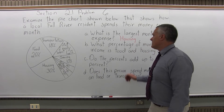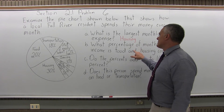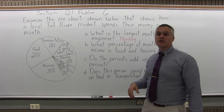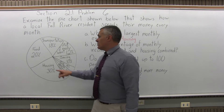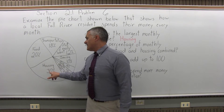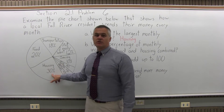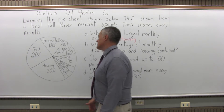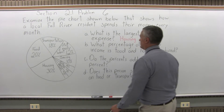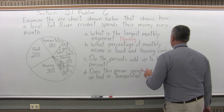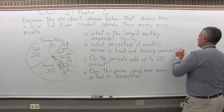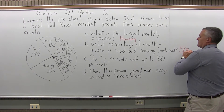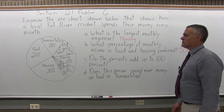Part B: what percentage of the monthly income is food and housing combined? The food is 20% and the housing is 30%, so 20% plus 30% is 50%. It's half of this person's monthly budget — 50%.